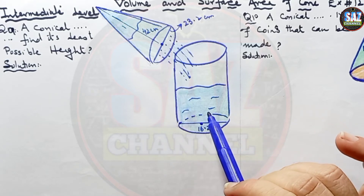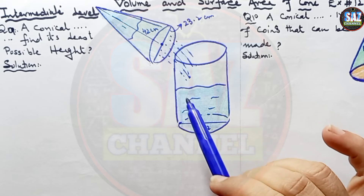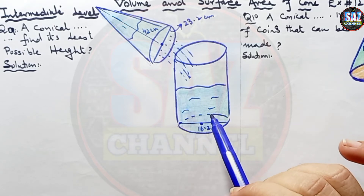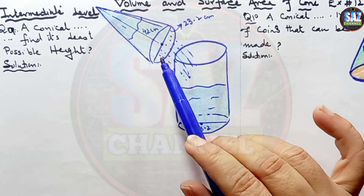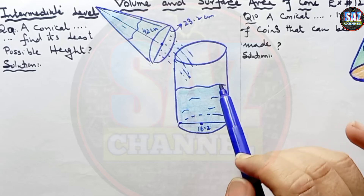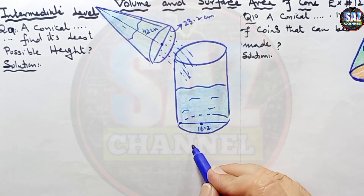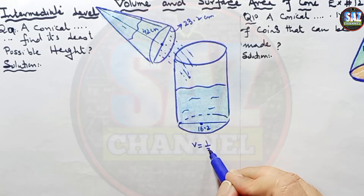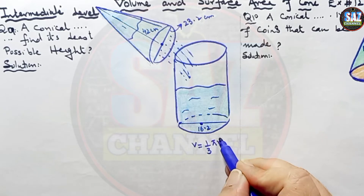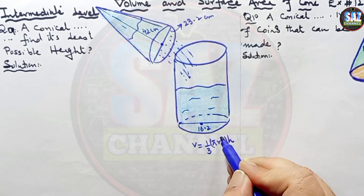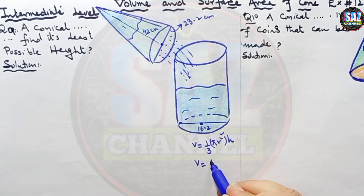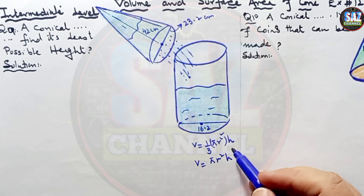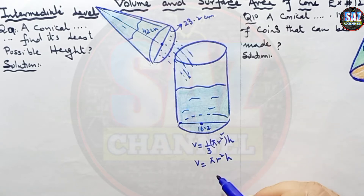This is the key concept: in order to find the depth of water in this cylindrical container, we have to equate the volume of the cone to the volume of the cylinder. The formula for the volume of a cone is 1/3 × π × r² × h, where r is the radius of the cone, and the volume of a cylinder is π × r² × h. We equate both volumes to get the depth of water in the cylinder.